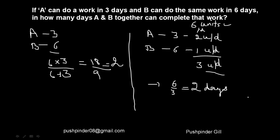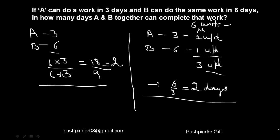Let me recap this procedure. A takes 3 days, B takes 6 days. I assumed the work to be 6 units — so A's rate is 2 units per day and B's rate is 1 unit per day. Together they finish 3 units per day, so to finish 6 units they take 2 days. This approach is more advanced and flexible than the basic formula.